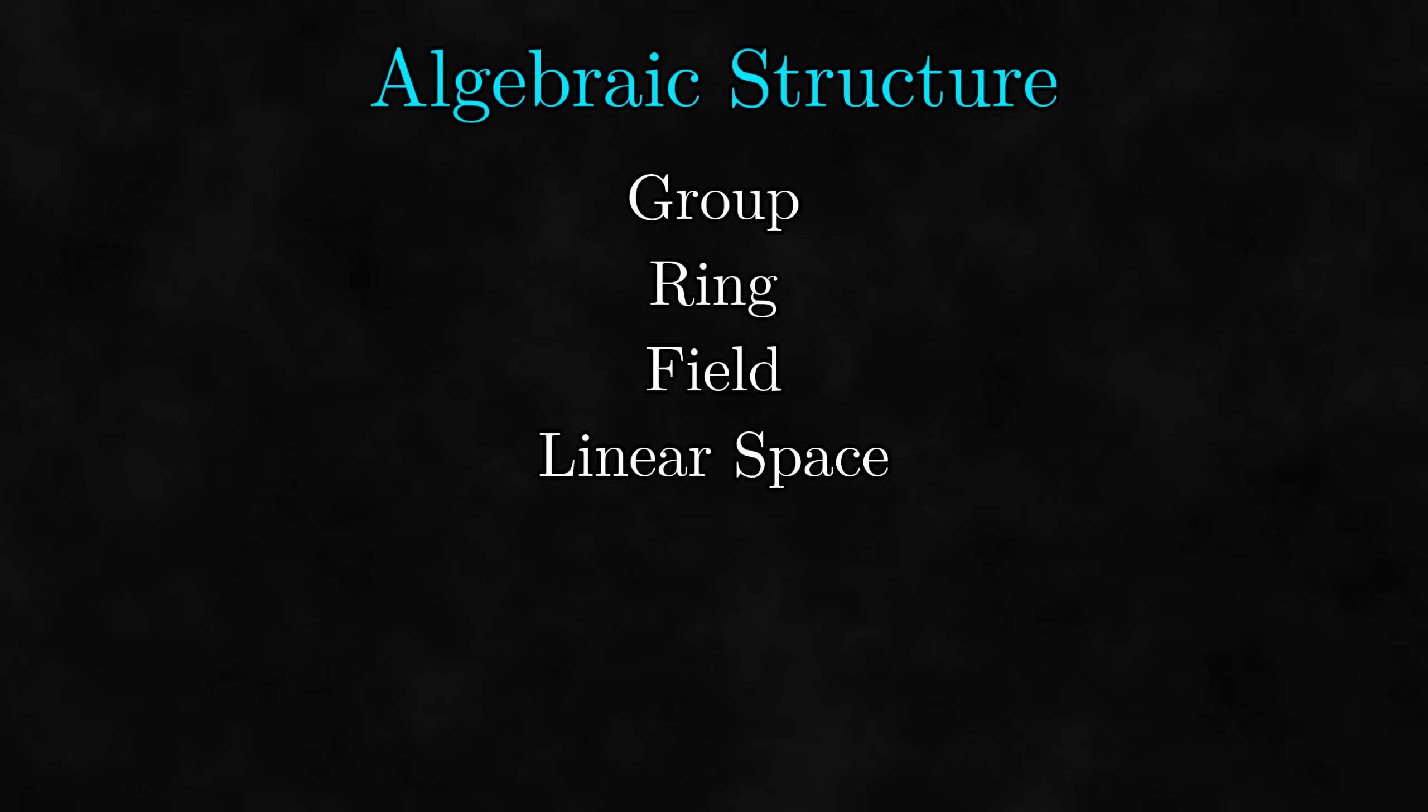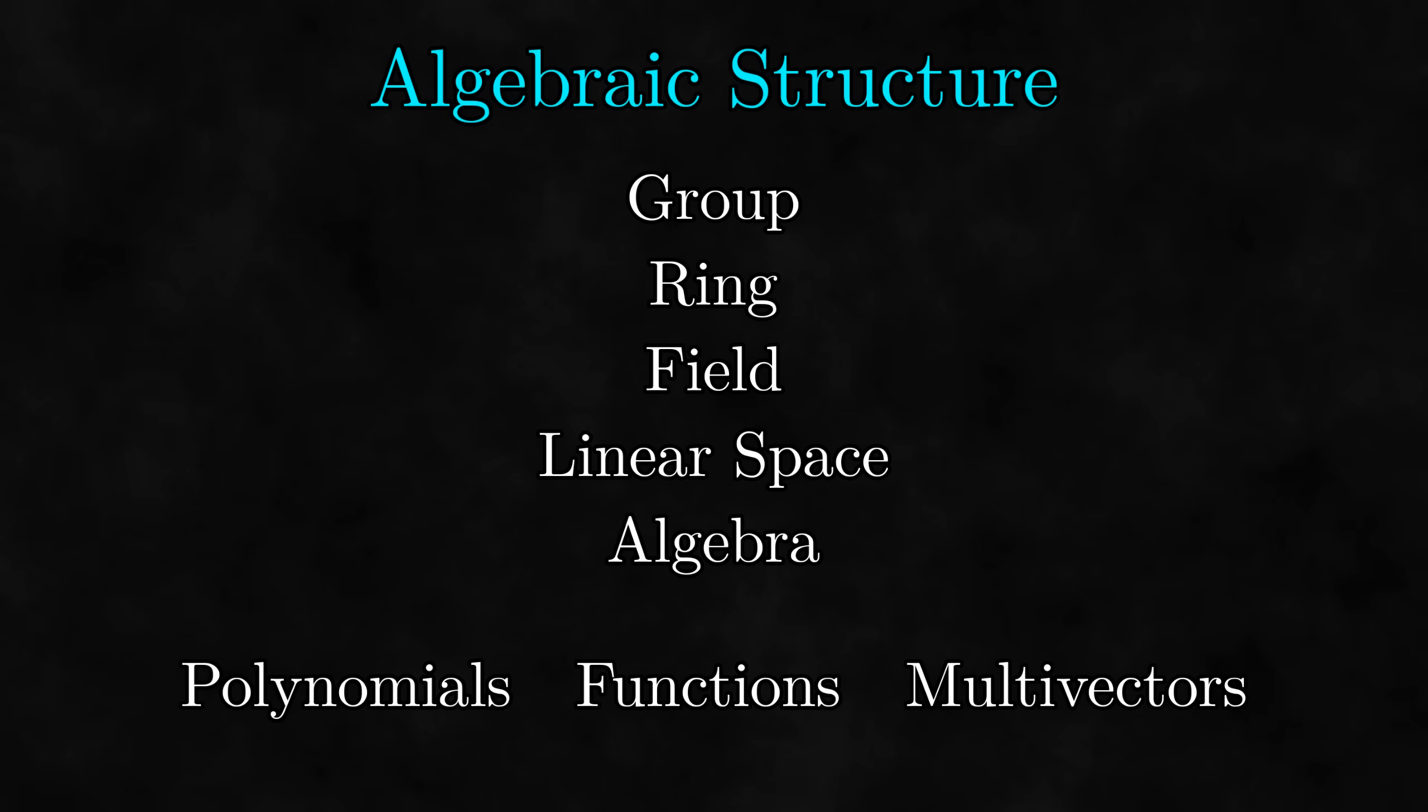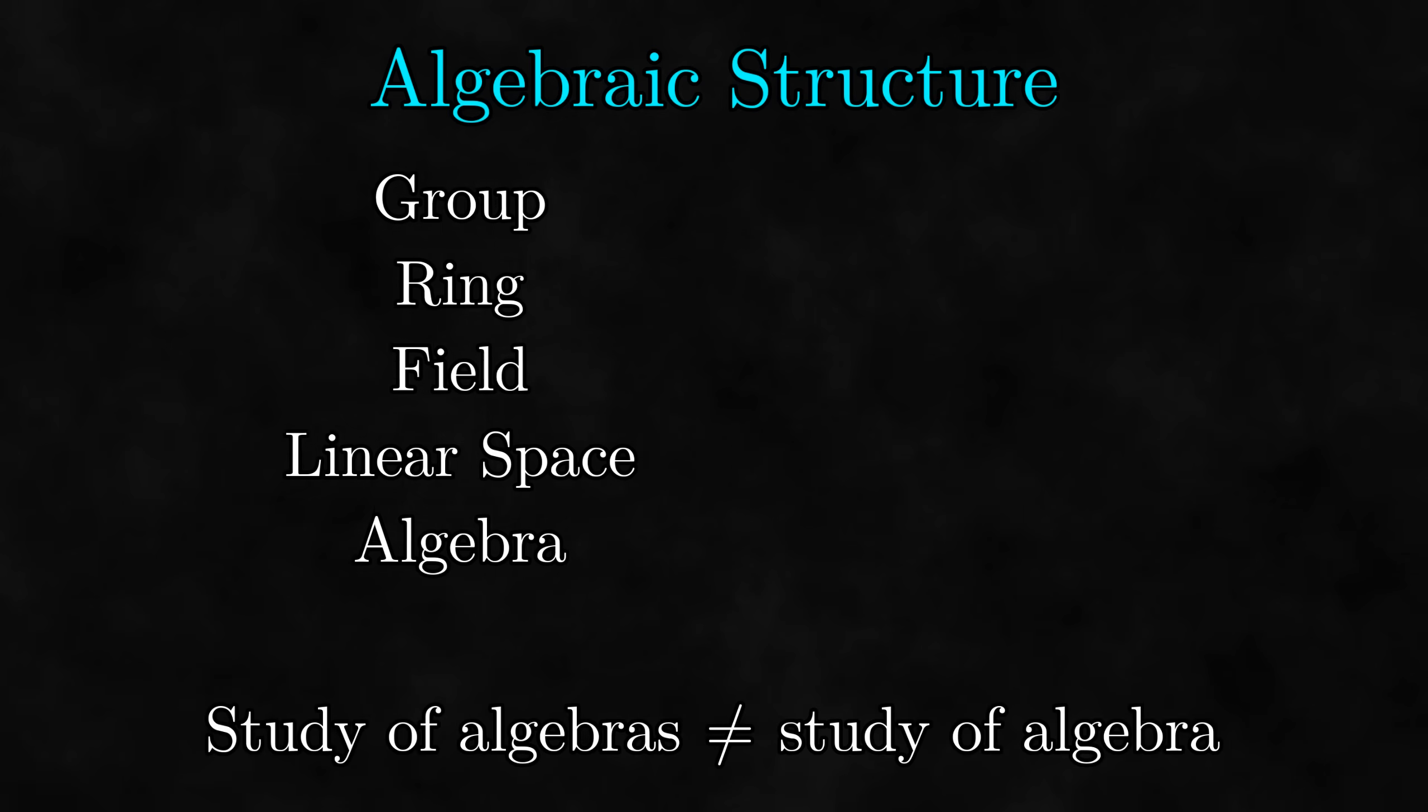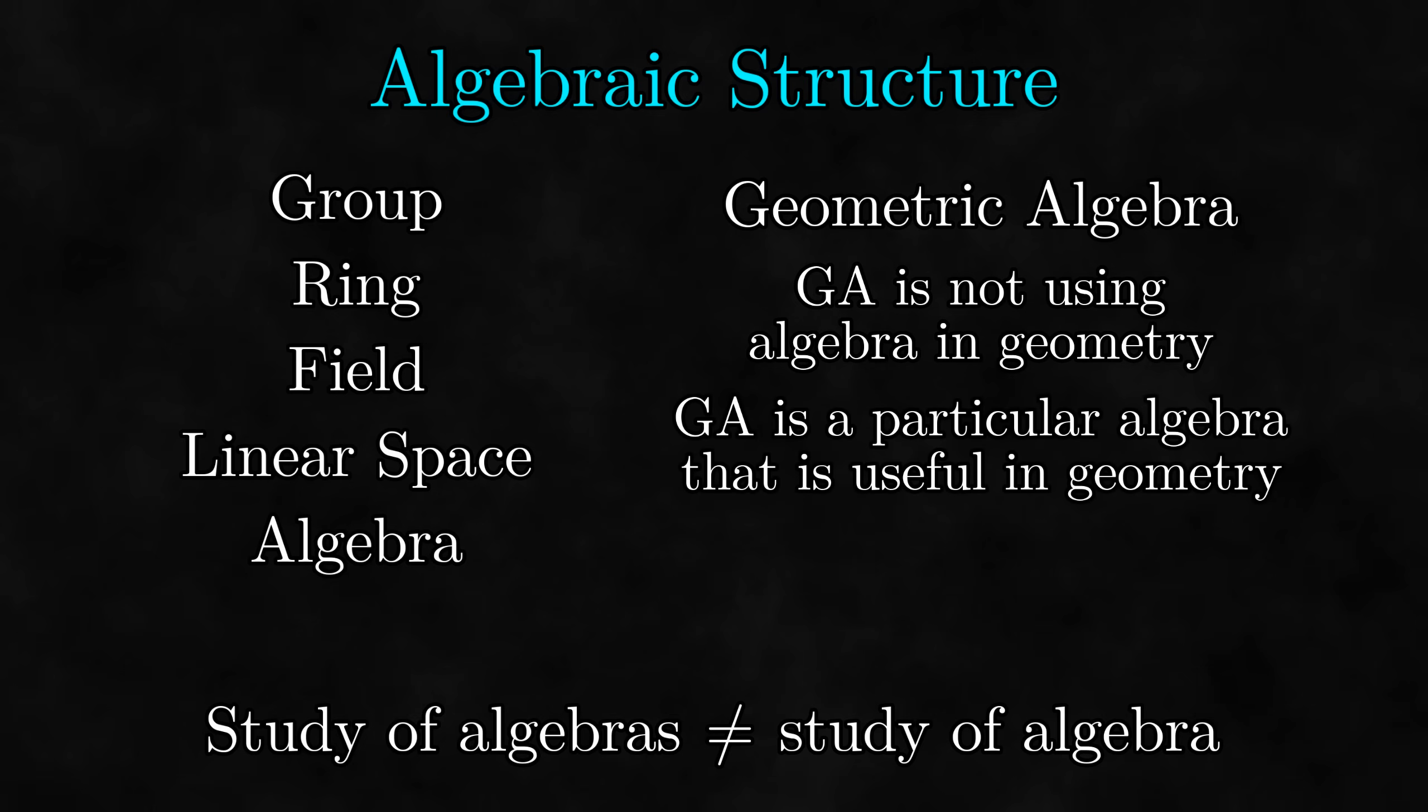However, multivectors are more than a linear space. We now have a definition of multiplication. It turns out that a linear space with a way to multiply is another algebraic structure that mathematicians sometimes talk about. There are many examples of this algebraic structure, such as polynomials, functions, and, of course, multivectors. So what name did mathematicians decide to give this algebraic structure? Algebra, of course. To be frank, this is a terrible name. Why did they decide to name a particular algebraic structure algebra? This means that the study of algebras is one of the subfields of the study of algebra. I bring this up because the word algebra in the term geometric algebra comes from this use of the word. It's not that we are using algebra in general to do geometry, it's that we are studying a particular algebra that is useful in geometry.